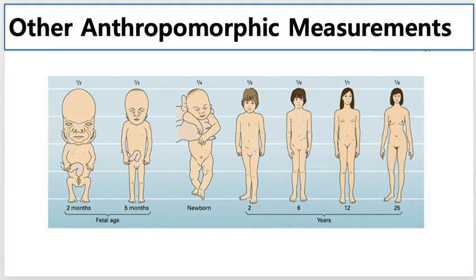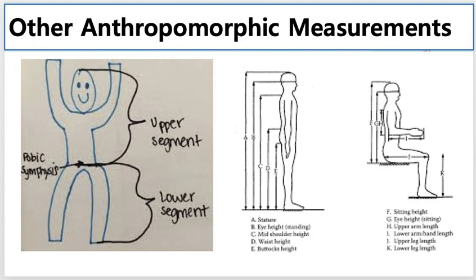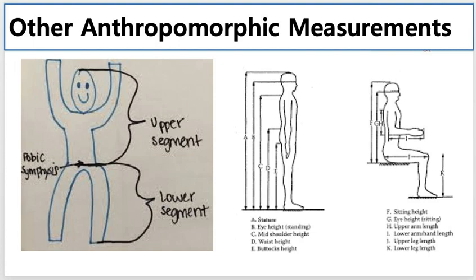There are multiple measurements that are done in terms of proportions and this touches a little bit of the genetics world that is linked with endocrinology. Conditions like Marfan syndrome, Klinefelter, acromegaly, achondroplasia, arachnodactyly, Soto syndrome will show alterations in the upper and lower segment ratios.